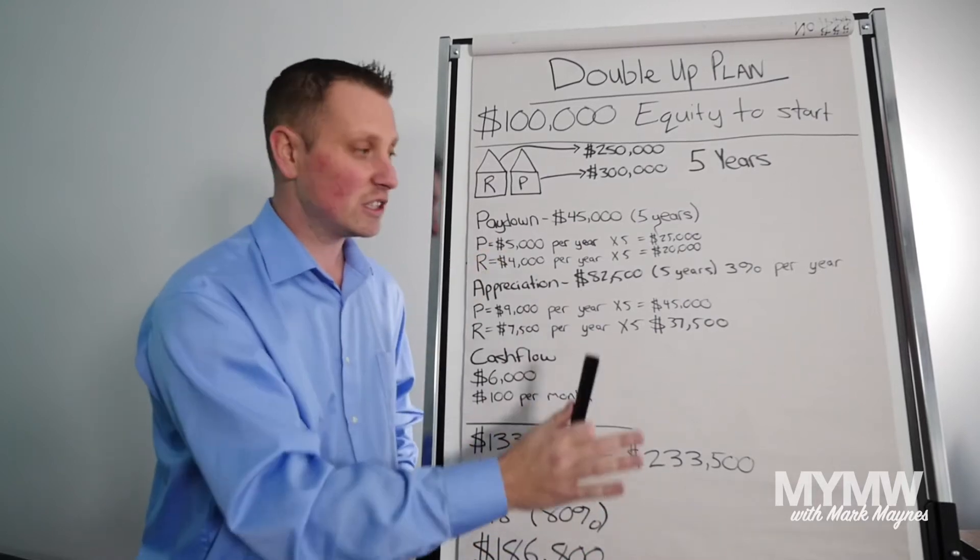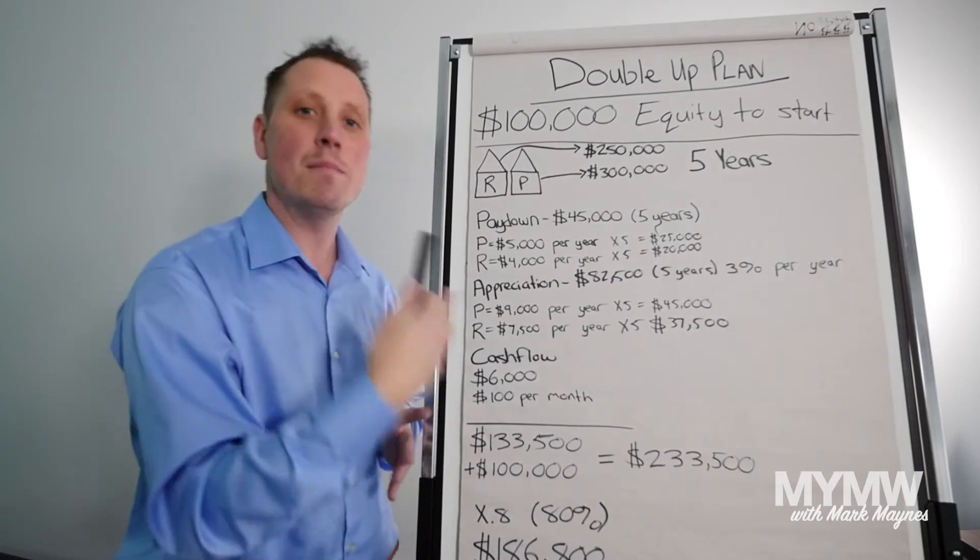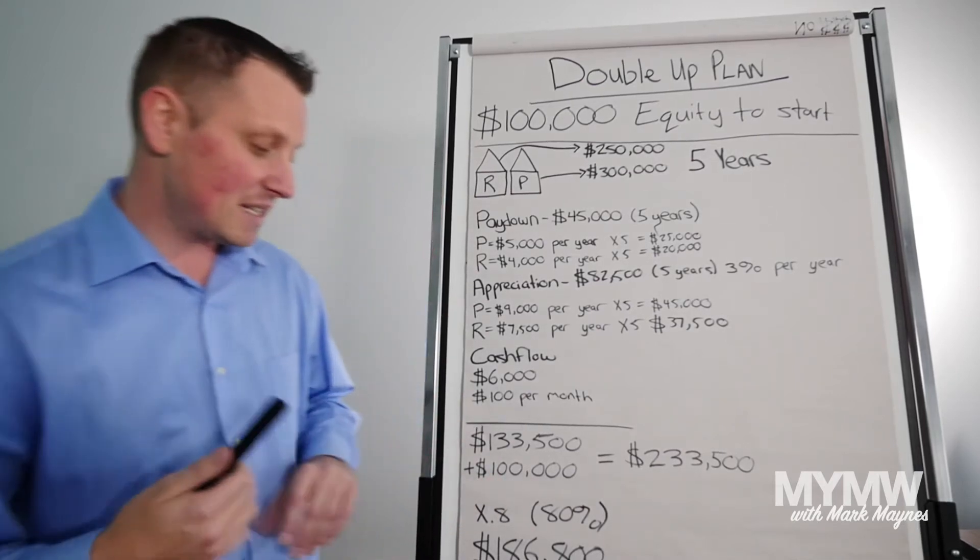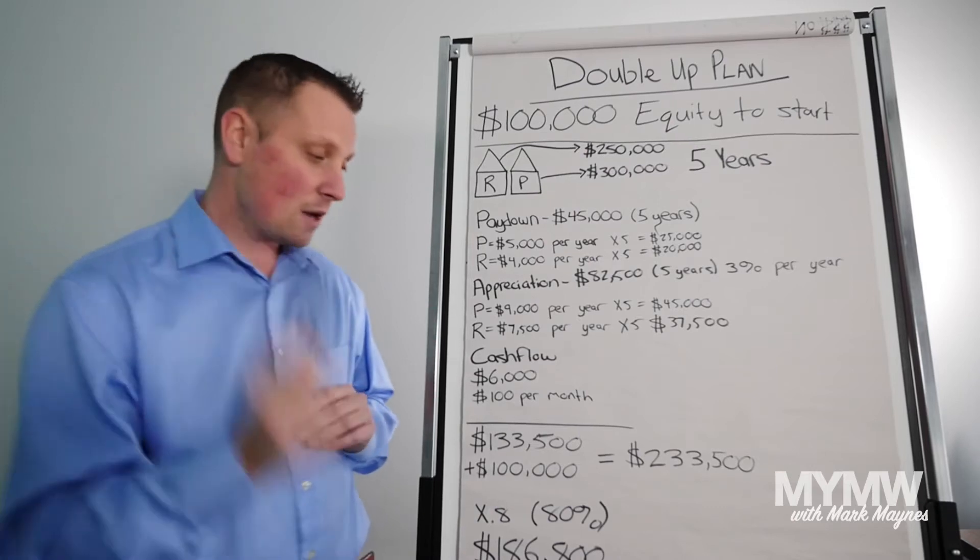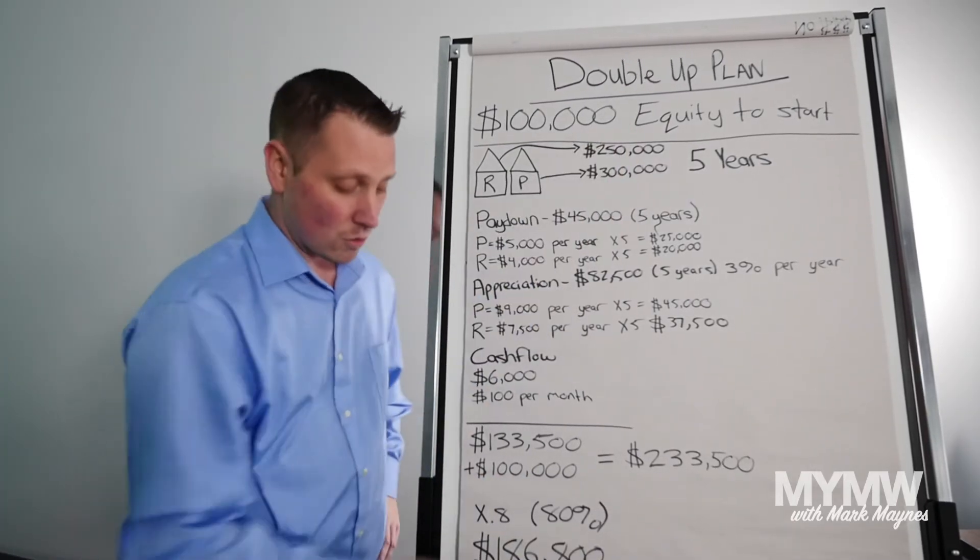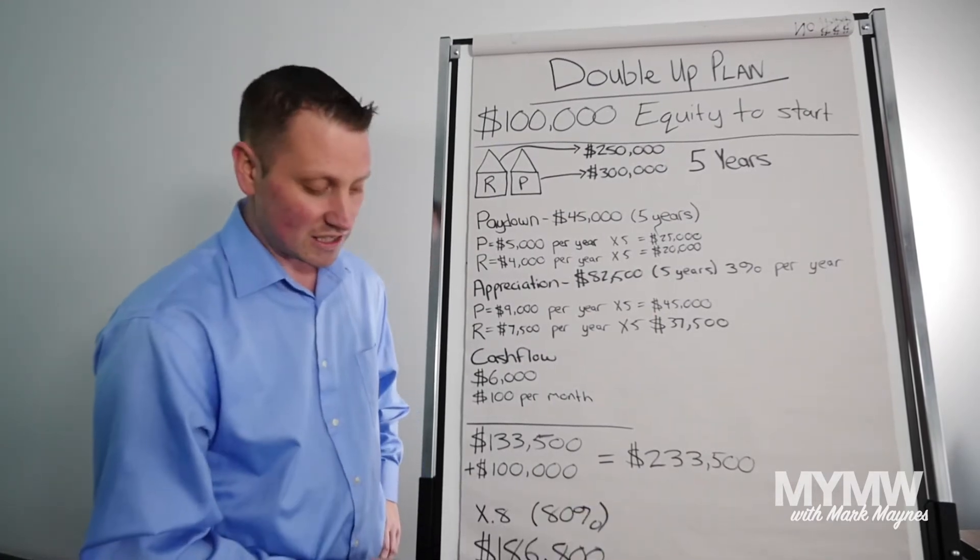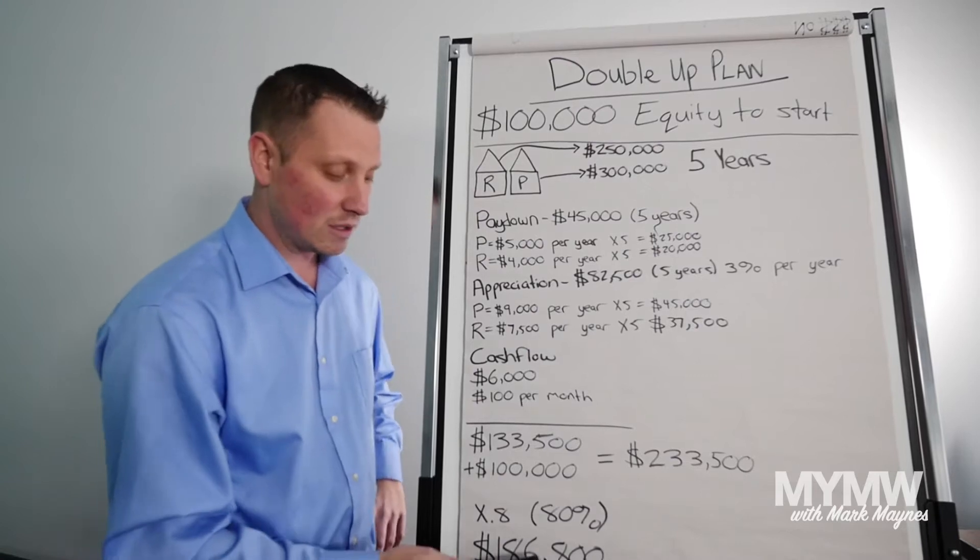Again, these are all simple numbers. I'm not compounding interest. So actually, if you wanted to take it further, it would be more but I want to give very basic numbers. So with $233,000, again, we're going to double up. We're going to times it by 0.8. So we're going to borrow 80% of this money, which is $186,800.